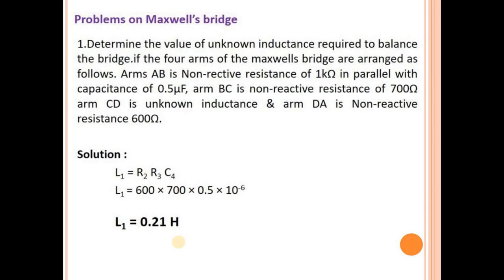Now let's look at an example. Determine the value of unknown inductance required to balance the bridge if the four arms of the Maxwell's bridge are arranged as follows: Arm AB is non-reactive resistance of 1 ohm in parallel with capacitance of 0.5 microfarad. Arm BC is non-reactive resistance of 700 ohm. Arm CD is unknown inductance. Arm DA is non-reactive resistance of 600 ohm. So the resistance is 1 ohm and capacitance is 0.5 × 10⁻⁶ farad.